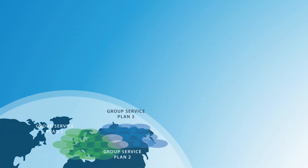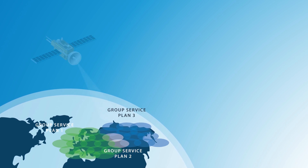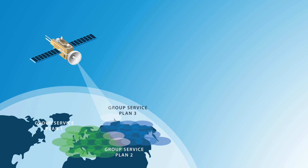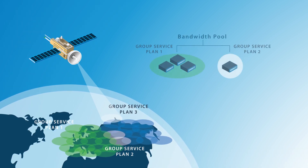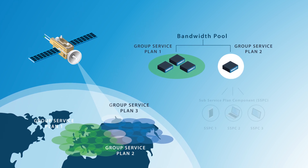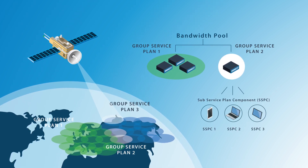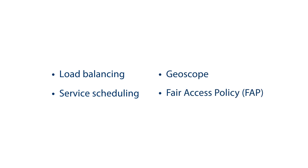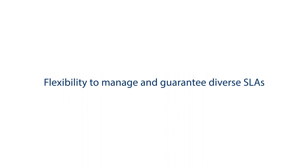Today, ST Engineering iDirect's global bandwidth management allows for countless possibilities of quality of service levels, bandwidth management, and traffic prioritization. HTS optimized quality of service management allows for bandwidth partitioning of a capacity pool of numerous spot beams into multiple service tiers across the entire payload, managing service partitioning among VNOs and end customers. Velocity supports features such as load balancing, service scheduling, geoscope, and fair access policy to help better manage congestion and optimize fill rates — resulting in more flexibility for satellite network operators to manage diverse user profiles and guarantee a diverse range of SLAs.